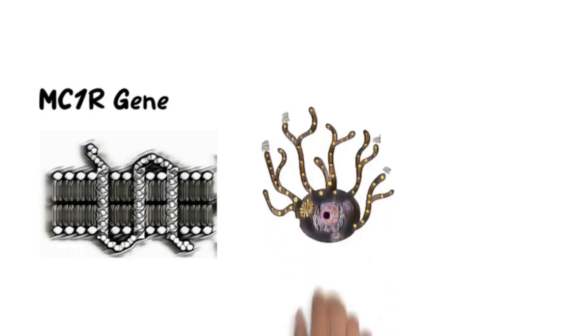The MC1R gene produces a protein called the MC1R receptor, which is found in melanocytes, specialized cells that create melanin.